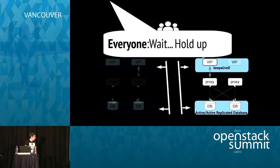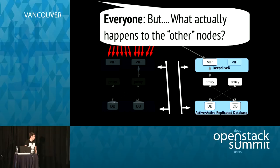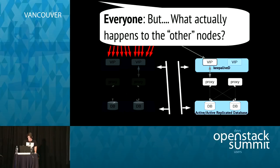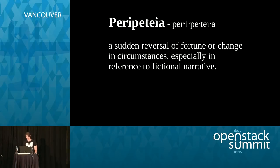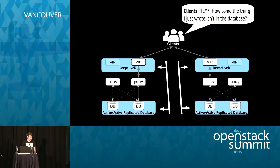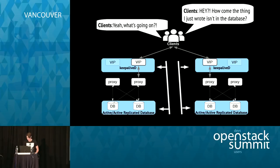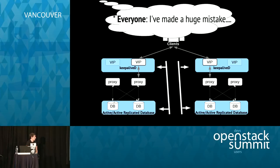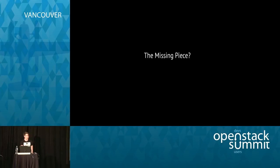There's a problem. Everyone asked one last very important question: what actually happened to the unresponsive nodes — the ones that KeepaliveD is telling us are dead and routing traffic away from? KeepaliveD said 'what other nodes?' The reality is those instances weren't unresponsive at all. There was a network split and two partitions had formed. Now they're having data consistency issues — clients are writing things, retrieving them, and all kinds of undeterministic behaviors are occurring.